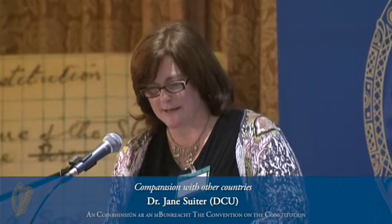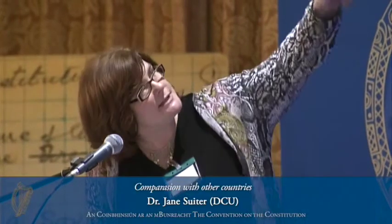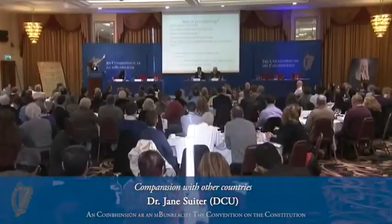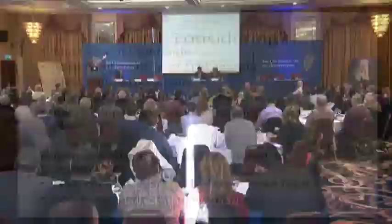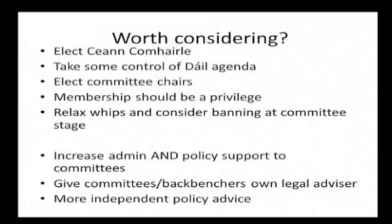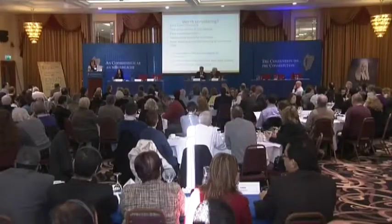And the last thing is on the whip. The things to consider are: electing the Ceann Comhairle, allowing them to take more control of the Dáil agenda, electing chairs, relaxing whips, not having a three-line whip all the time, increasing admin and policy support, giving committees and backbenchers their own constitutional legal advisor, and providing more independent policy advice in general. Thank you very much.